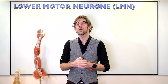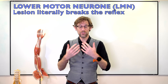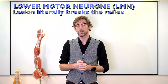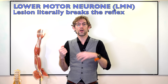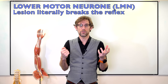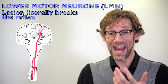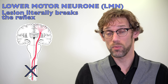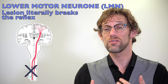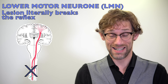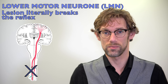Conversely, with our lower motor neuron, the reflex arc is literally broken. With our upper motor neuron lesion, we're losing control of it. With our lower motor neuron lesion, we're breaking the arc. So something on the efferent pathway, somewhere from the ventral horn all the way up to the muscle, the nerve is broken, and like a break in a circuit, we can't get that signal anymore.